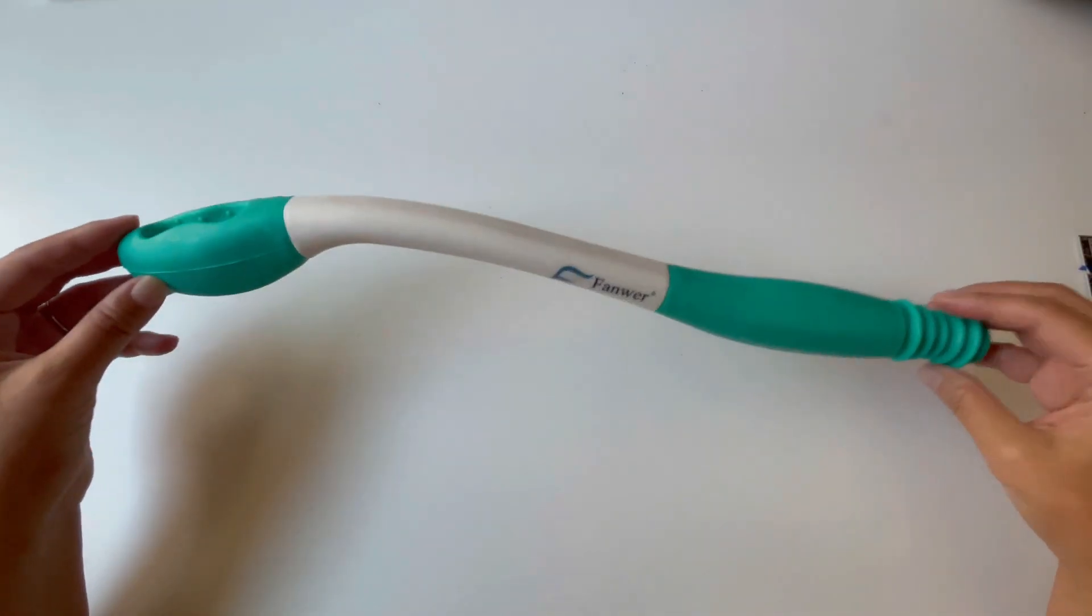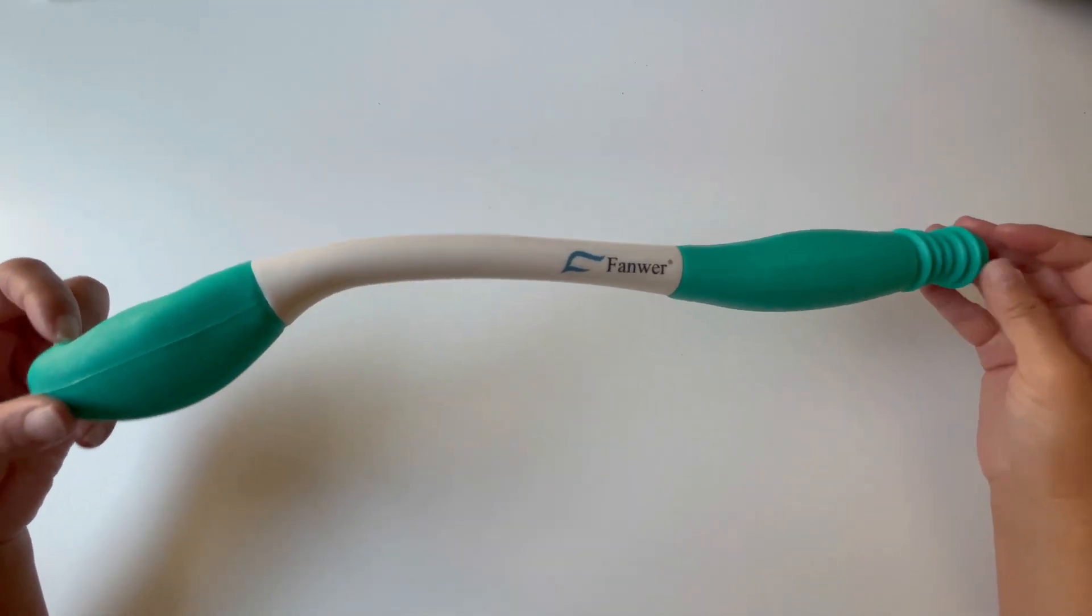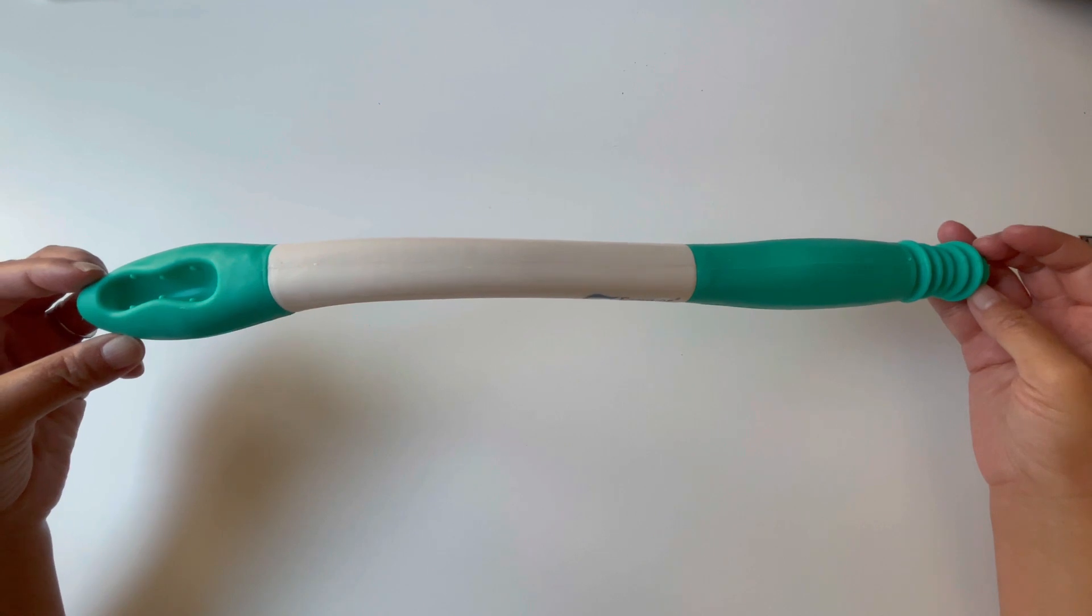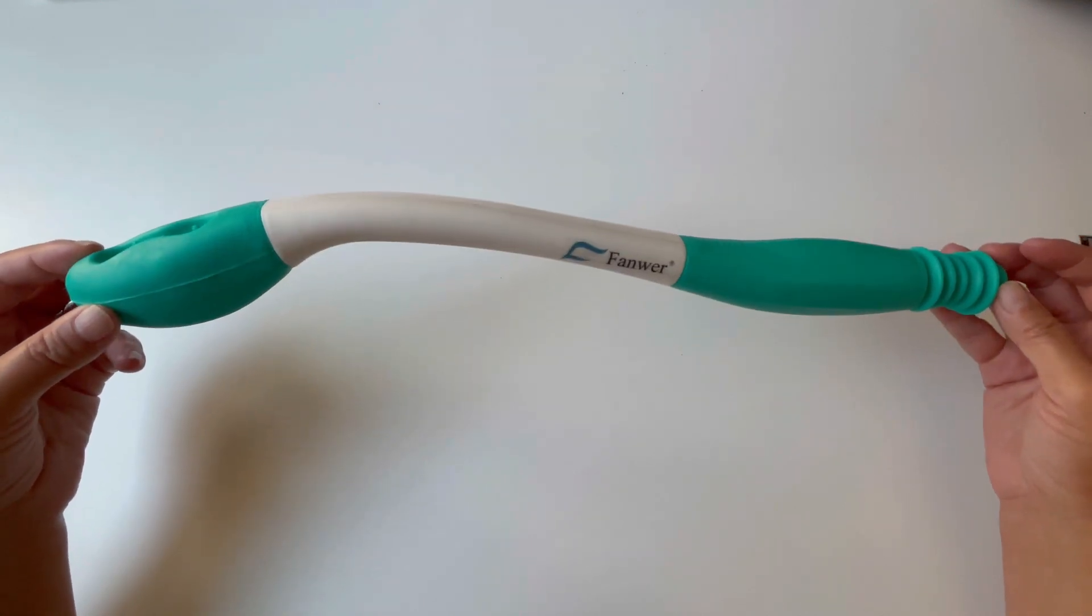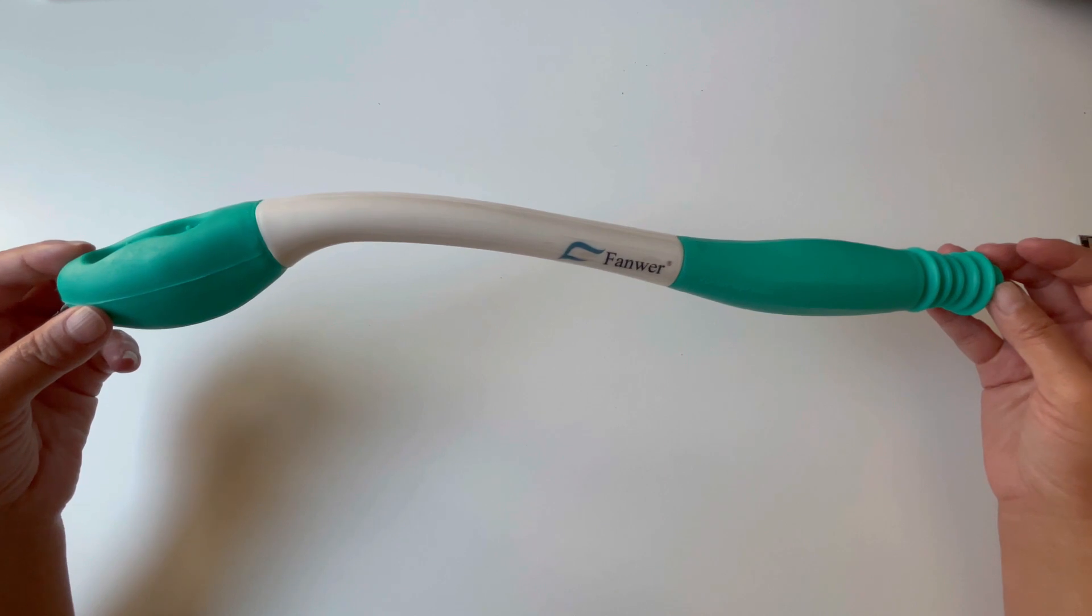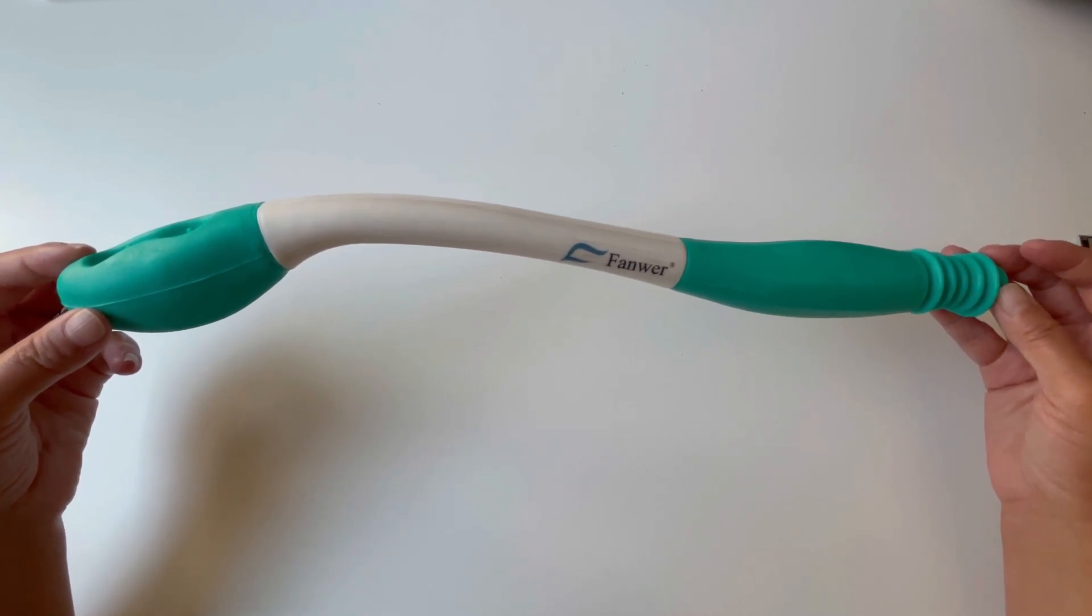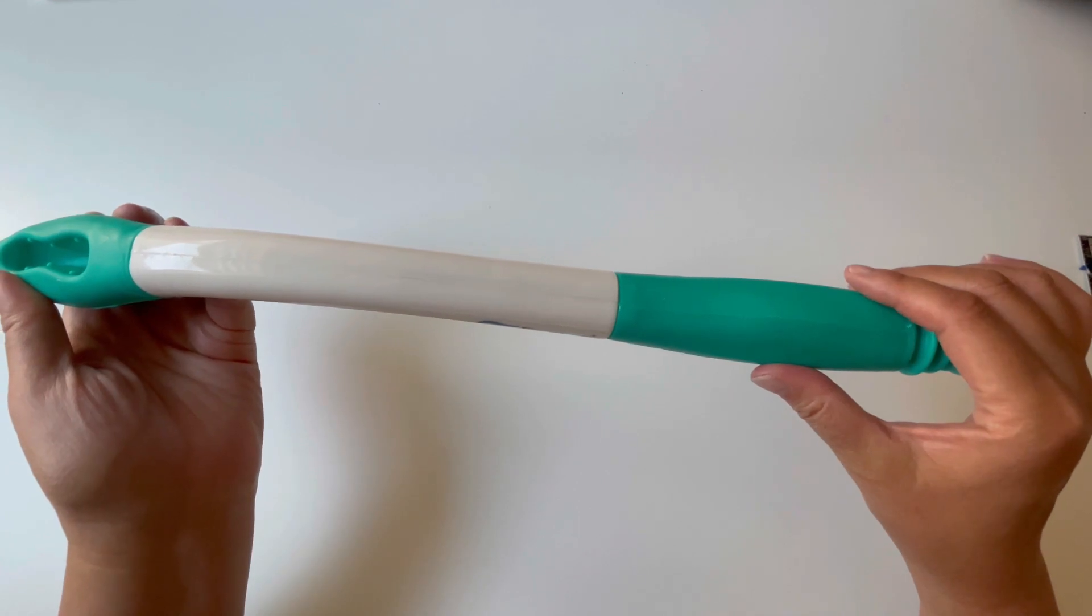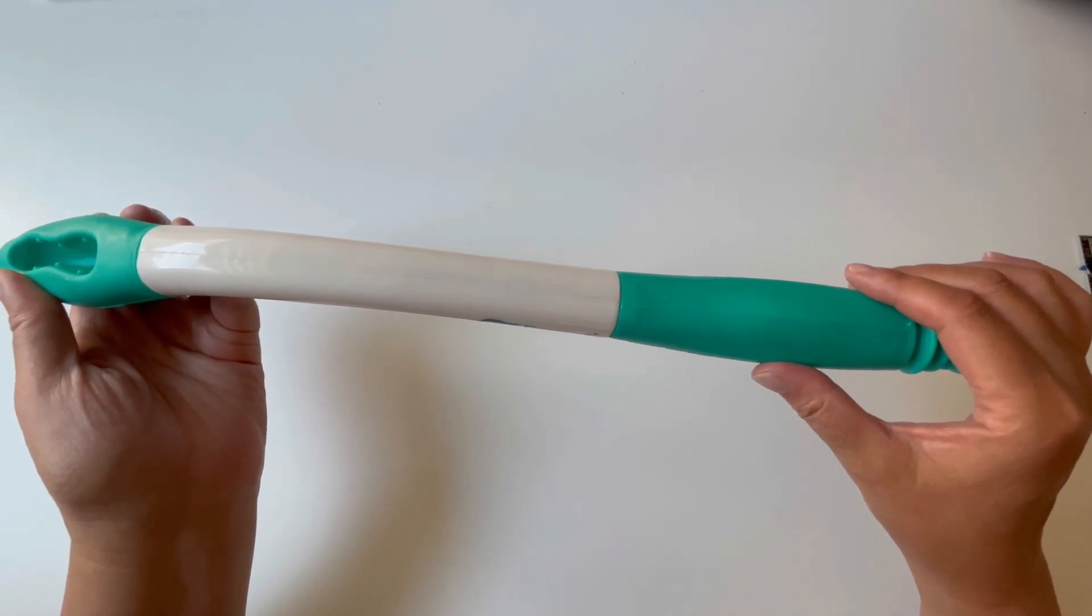Fawner has put a lot of thought into this. This is around 15 and a half inches long. It is made of plastic and the handle and the tip is made of a more tacky plastic.